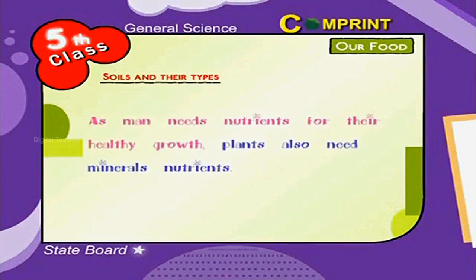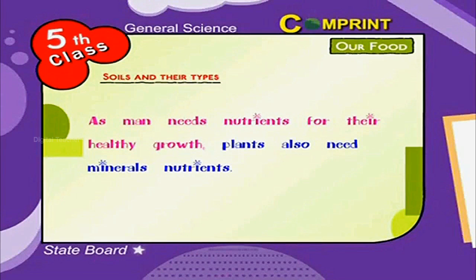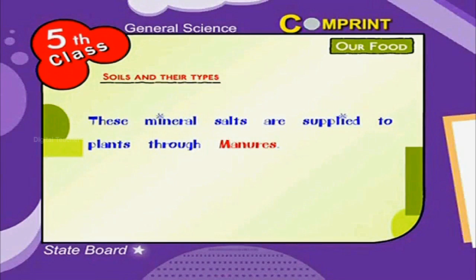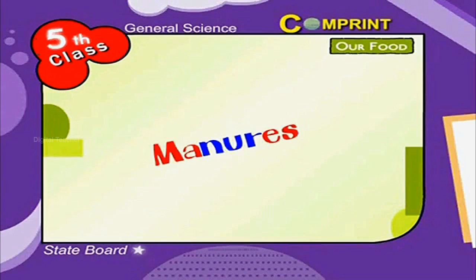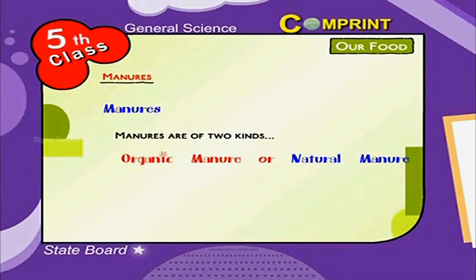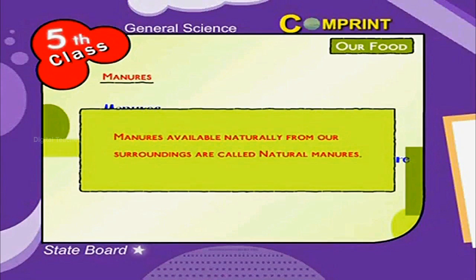As man needs nutrients for healthy growth, plants also need mineral nutrients. These mineral salts are supplied to plants through manures. Manures are of two kinds: organic or natural manures and inorganic or artificial manures. Manures available naturally from our surroundings are called natural manures.